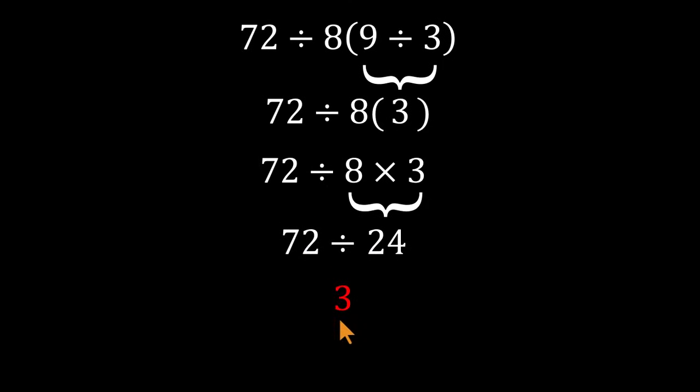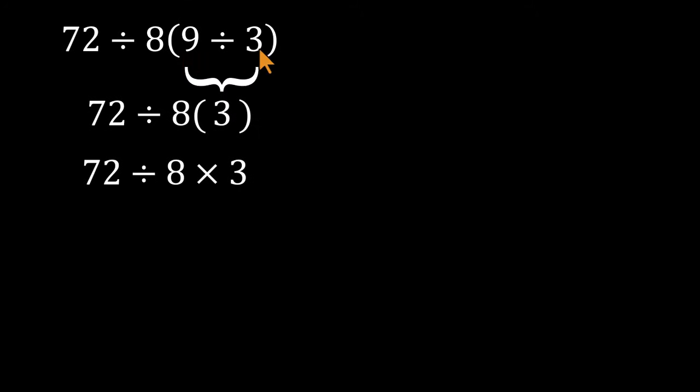Clean, fast, and confidently wrong. Here's why that move breaks the rules. Those parentheses do not create a single denominator. They only tell us to evaluate 9 divided by 3 first.